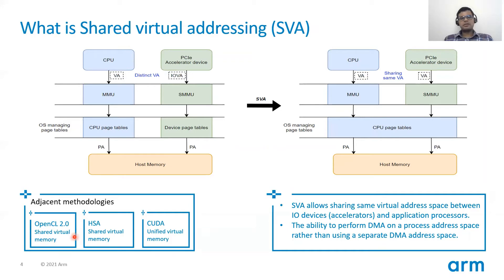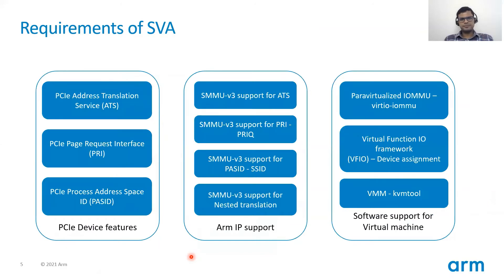Some of the existing methodologies such as OpenCL 2.0 shared virtual memory, CUDA unified memory, etc. can make use of shared virtual memory. Now let's look at some of the requirements on the hardware and software side for SVA. The PCIe device or the PCIe accelerator device usually will need to implement the PCIe specifications for ATS, PRI, and PASID.